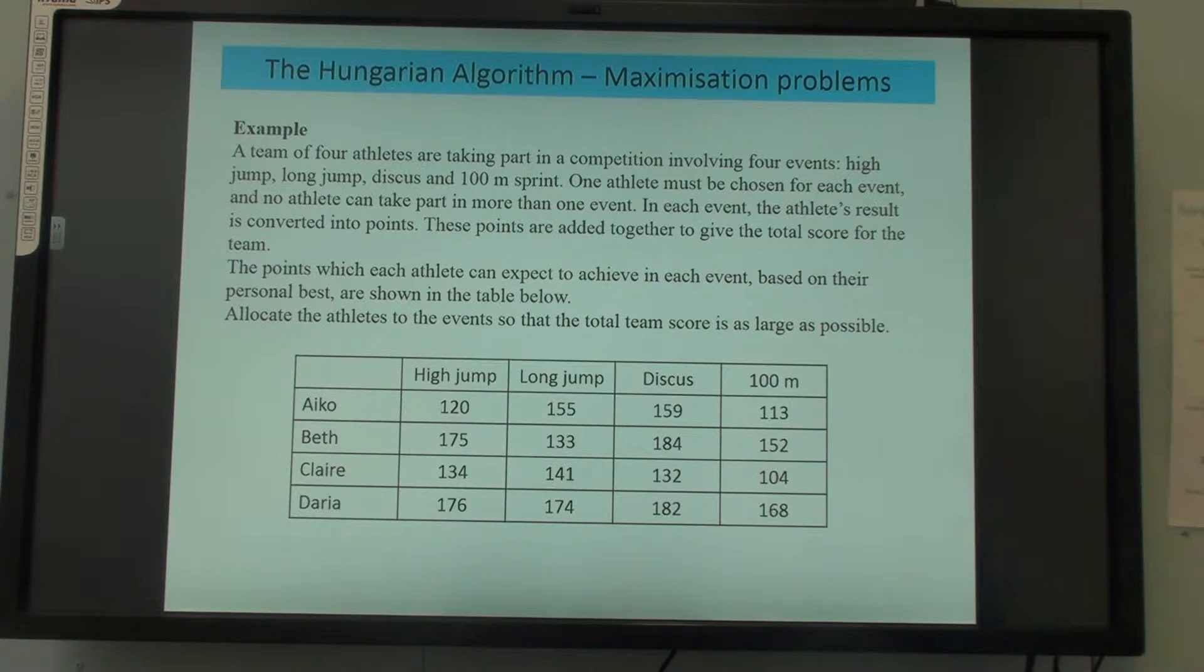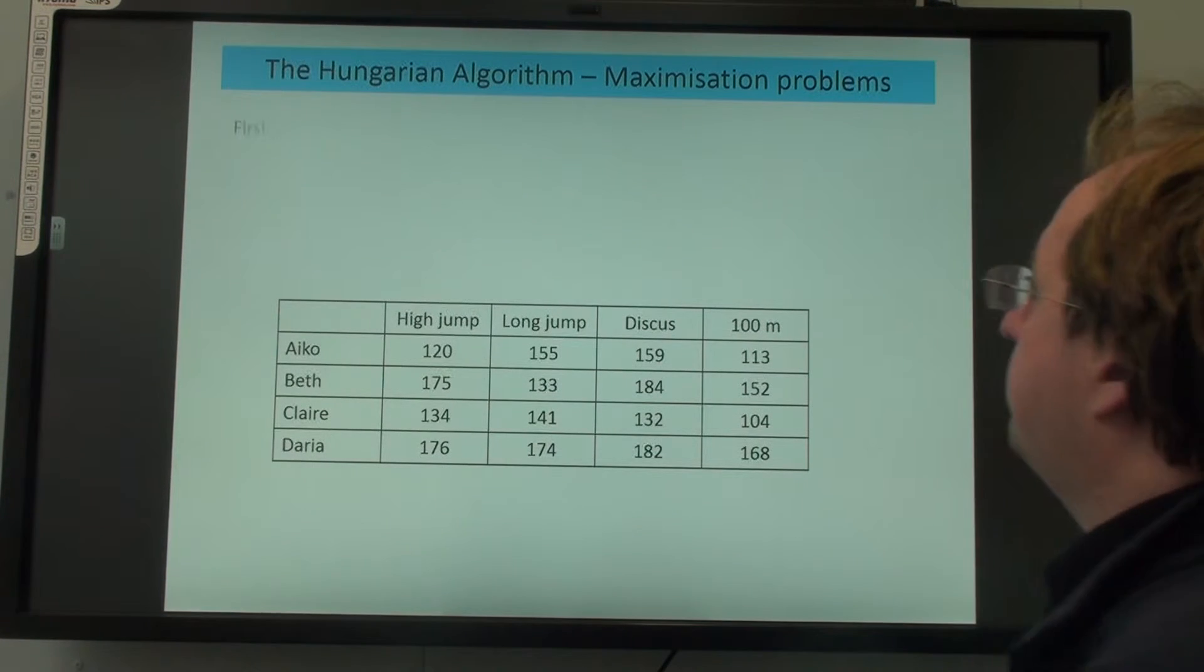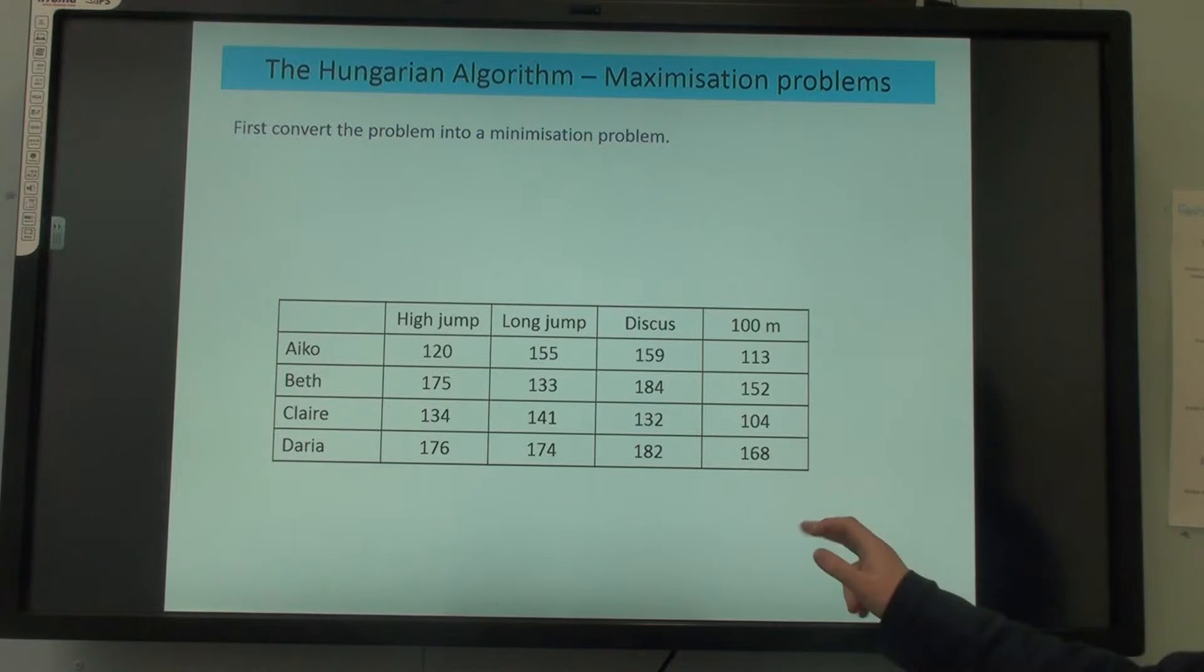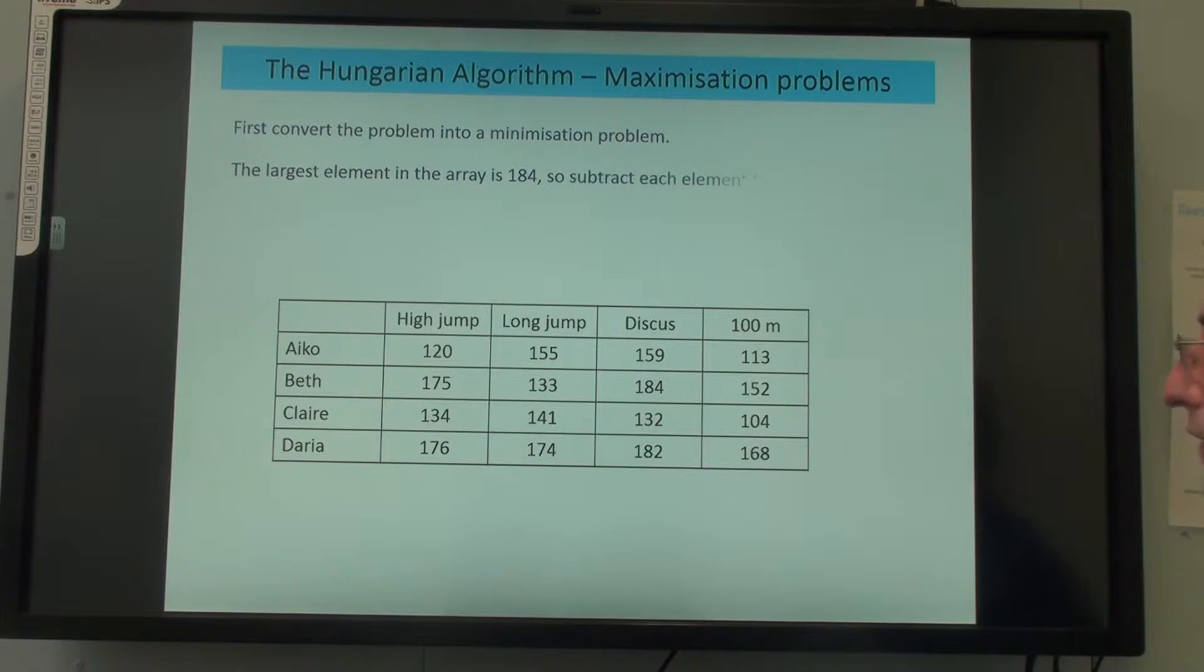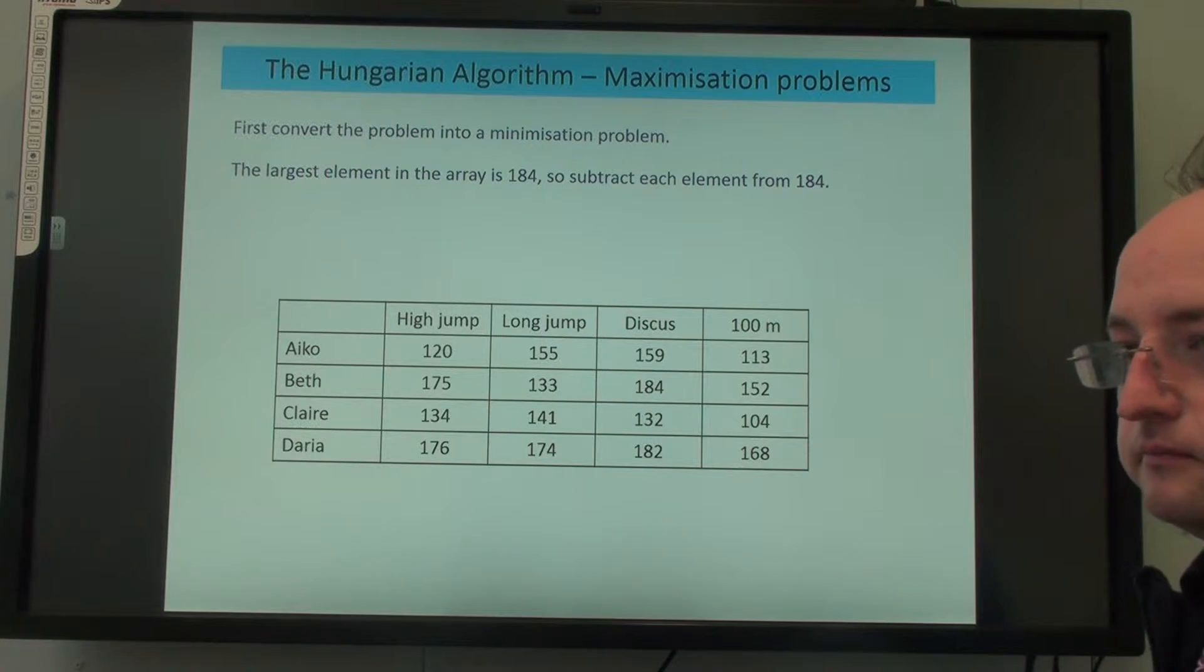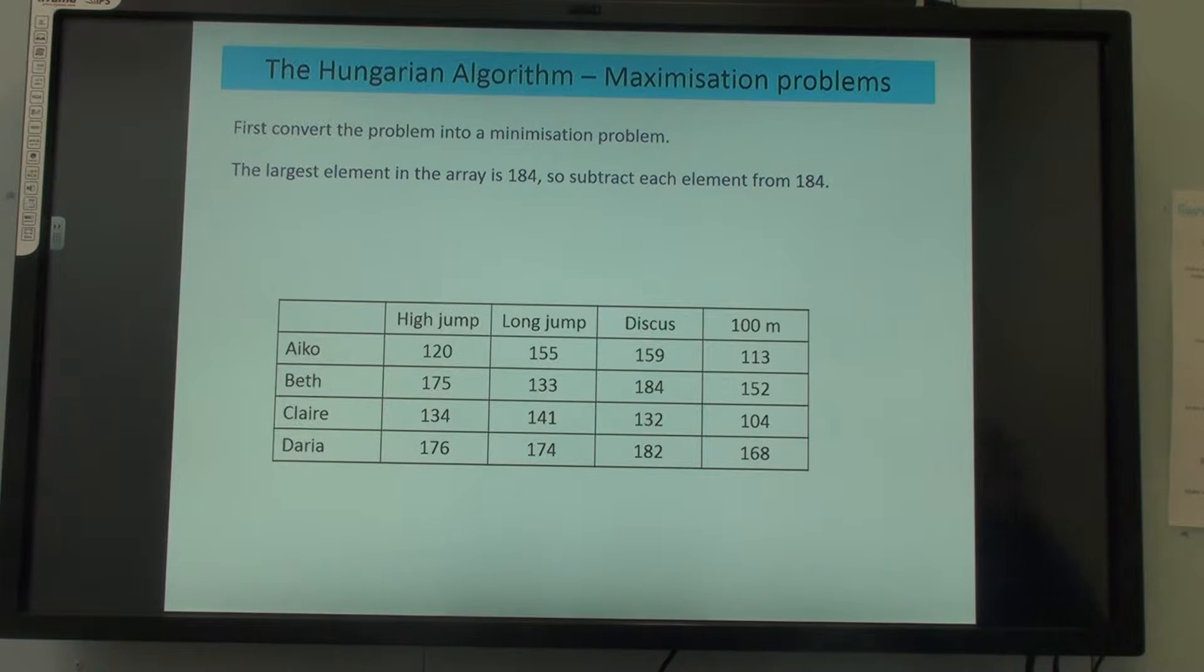You make all these negative, subtract the smallest value from each row, the smallest value from each column. That's quite a lot of effort and there is actually a shortcut you can do. Your book will tell you make them negative, subtract the smallest value from each row. What you can actually do as a shortcut is subtract the largest element from every value in the table. The largest element in the array in this case is 184.